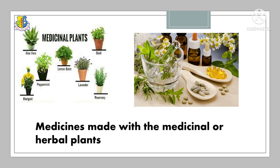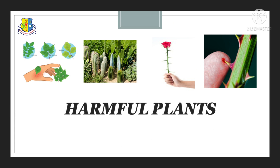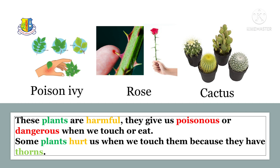Now we will see about harmful plants. These plants are harmful. They are poisonous or dangerous. When we touch or eat some plants, they hurt us because they have thorns. Examples: poison ivy, rose, and cactus. That's it for now. Thanks for watching. See you again in the next class. Till then, bye bye!